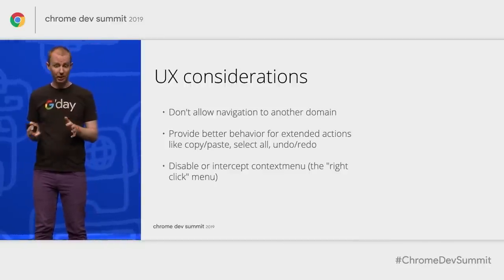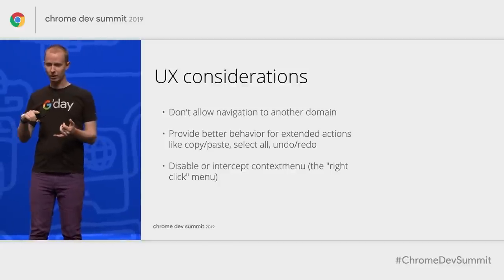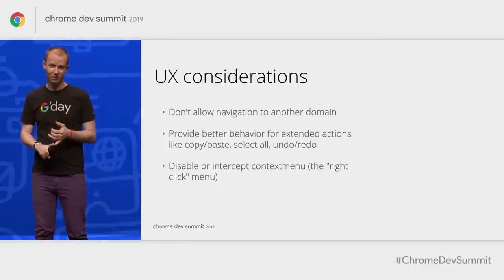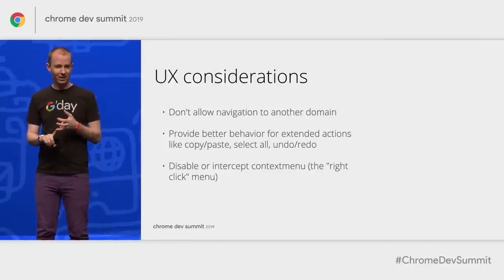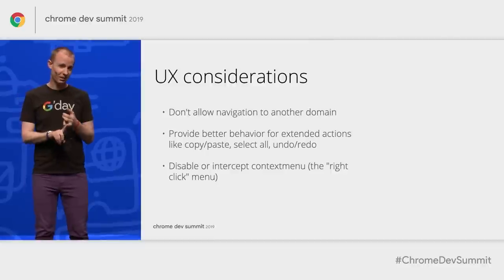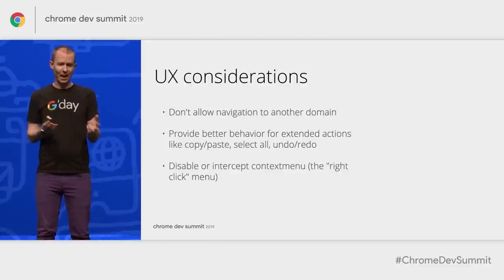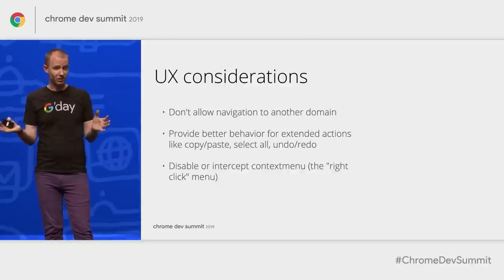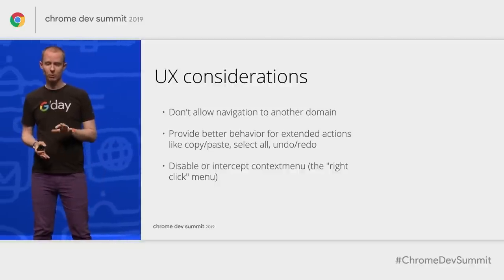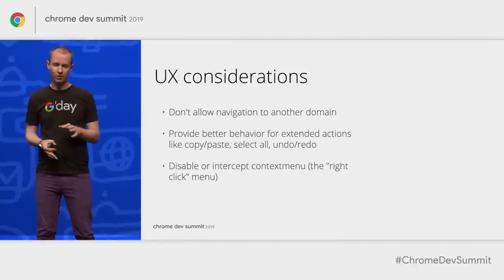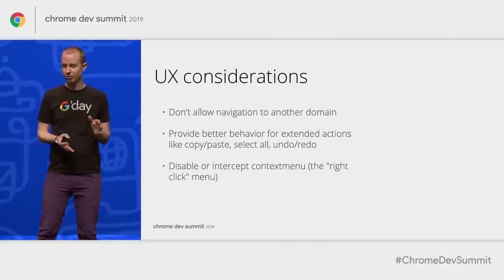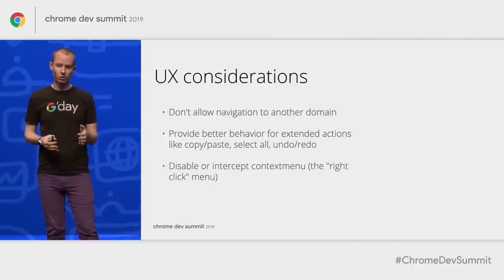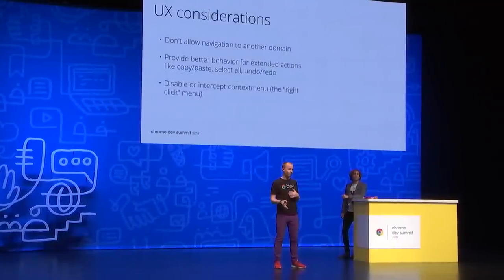You'll also want to think about some UX changes. Don't allow navigation outside your own site — if you do, users will get an ugly URL bar; always open external content in a new window. Think about better behavior for extended actions like select all, undo, and redo, especially if your experience is app-like. And finally, you might want to do something different with the right-click menu when installed on desktop. The default menu includes items like 'save as' or 'cast' that barely make sense — and while it's bad practice to disable this on the web, when you're installed there's real license to improve the user experience by hiding these options.